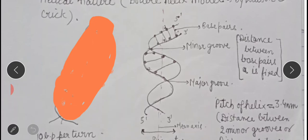This helical model with its slight pattern of twist and turns was given by Watson and Crick. You can see in the structure that there are twist and turns, and there are grooves visible in the helix.